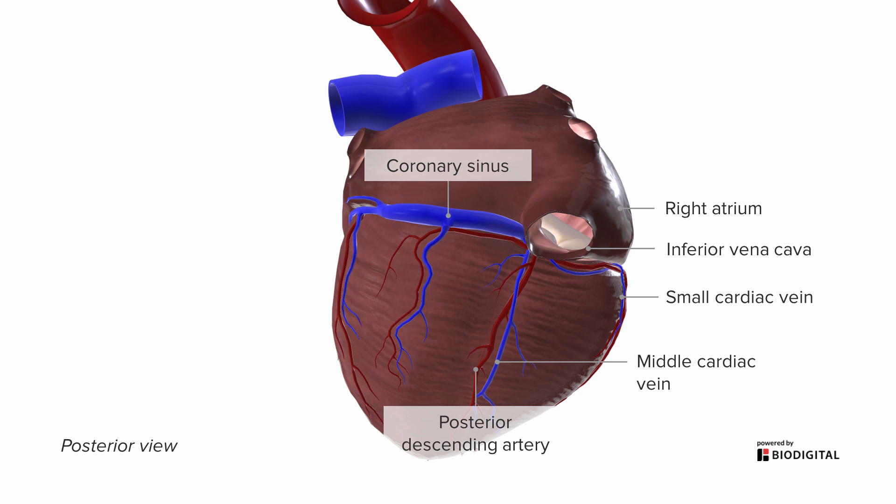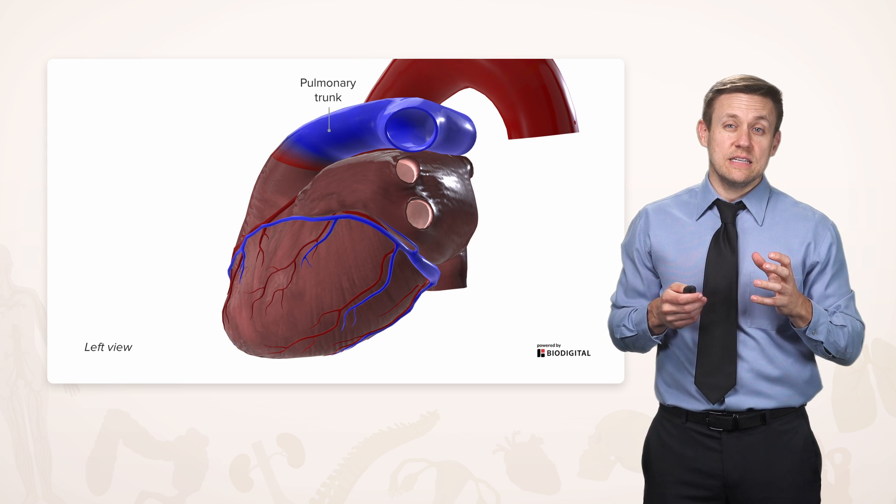We also see another big vein here that's descriptive because it's the posterior vein of the left ventricle. Tells you exactly where it is and what it's draining. And then a little tiny bit of something called the great cardiac vein. Doesn't look like much here, and so why would it be called great if it's just a tiny little thing? Well, we have to swing around to the other side to see the rest of it.